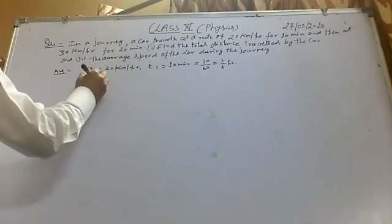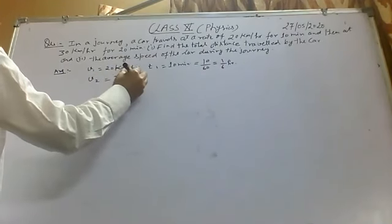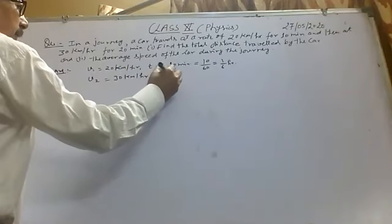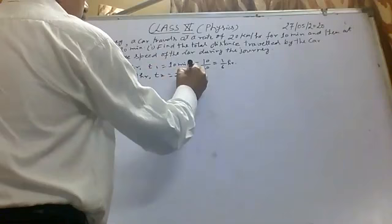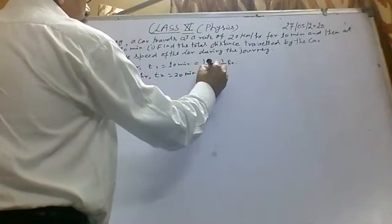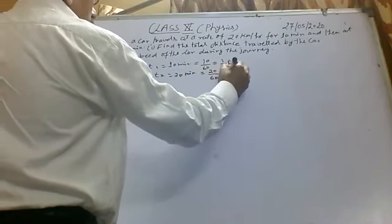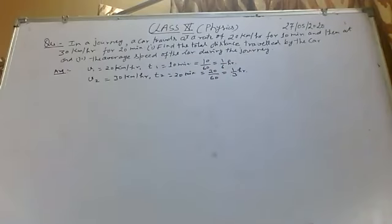And V2 is given as 30 km per hour and T2 is given as 20 minutes. So again we have to change into hours: 20 over 60 means 1 by 3 hours.